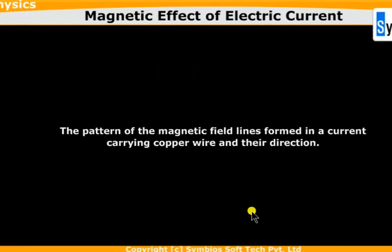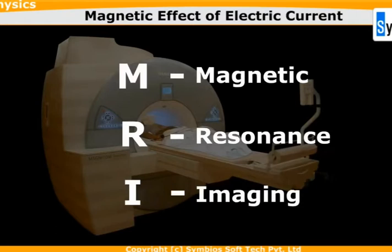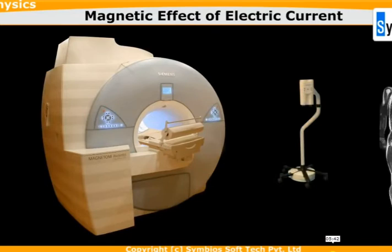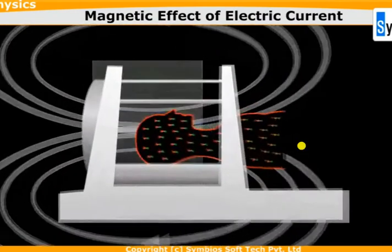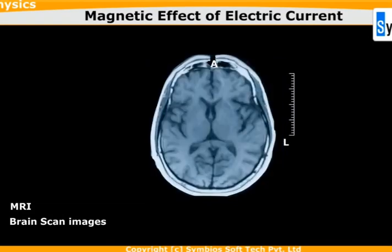Let's discuss the pattern of magnetic field lines and their direction around a conductor. There are many applications where magnetic effect of electric current plays a very important role. On screen you can see MRI, maglev train, and ATM machine. MRI means Magnetic Resonance Imaging - because of the magnetic field, scanning happens through our body as magnetic lines of force pass through the bigger magnet.